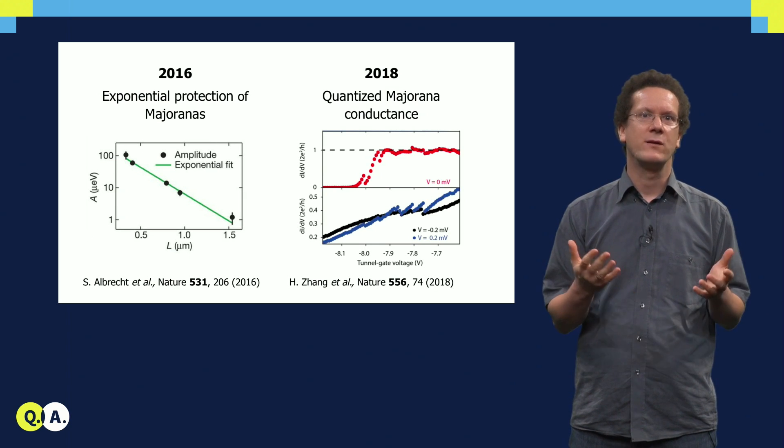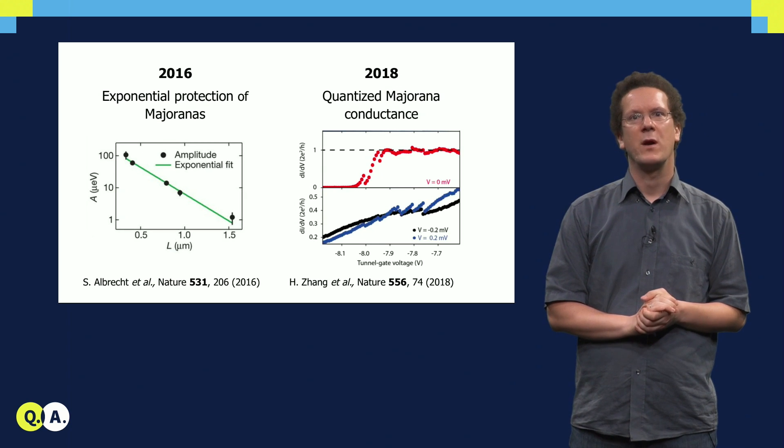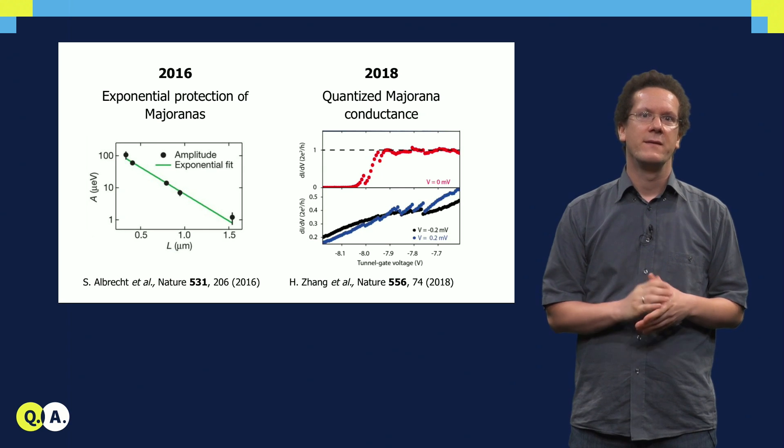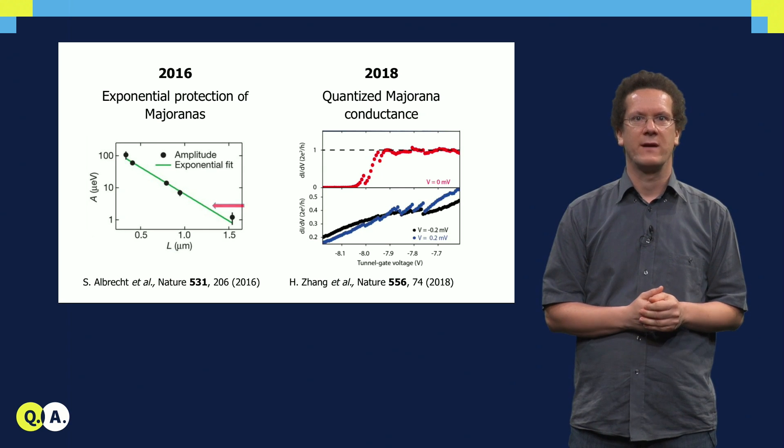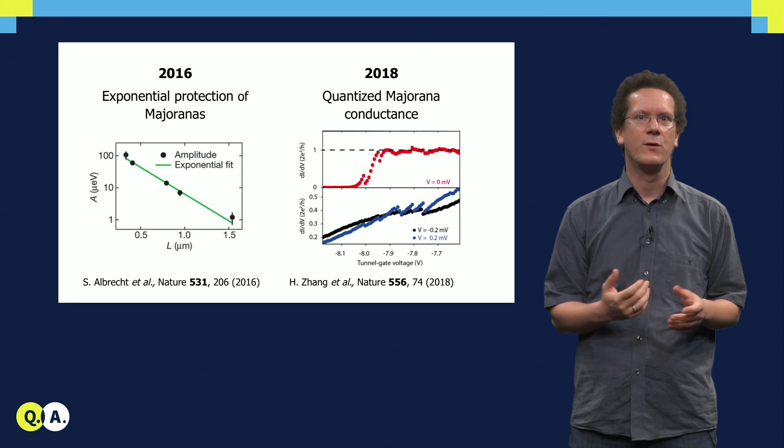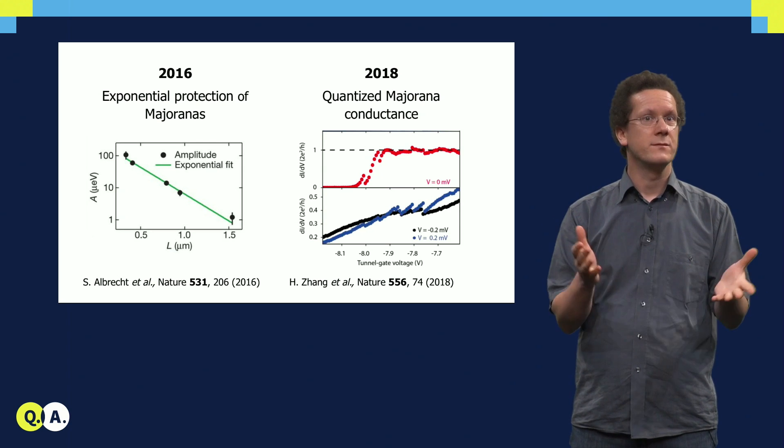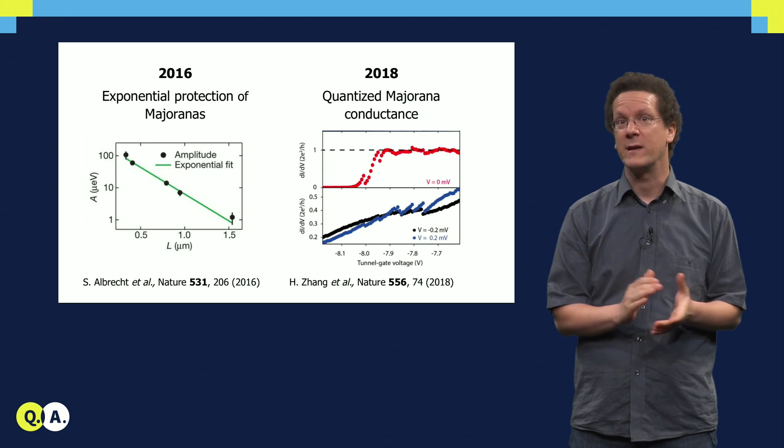I want to highlight two milestones in this field. The first one was the experiment in 2016 in the group of Charlie Marcus in Copenhagen. They showed that the states in these nanowires have an energy that is exponentially close to zero as a function of the length of the nanowire. This shows the exponential protection of Majoranas experimentally.